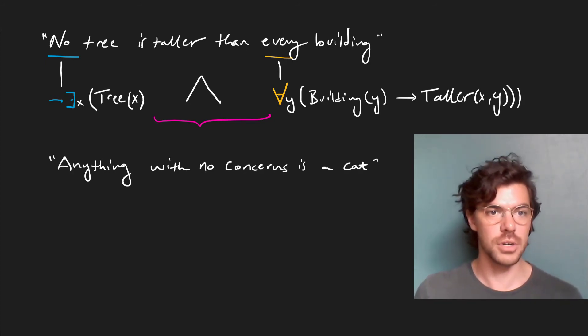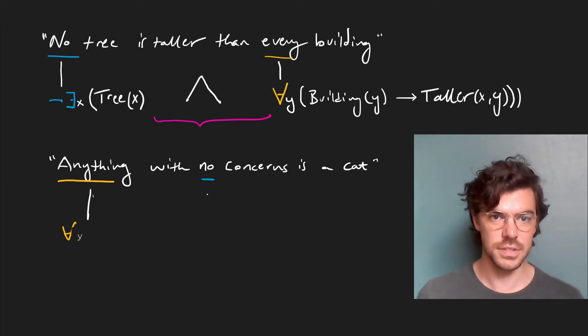So here again, we have our quantificational sign, anything, and another one, no. And this is equivalent with for every. And we know that no is to be translated as there doesn't exist, so not some.